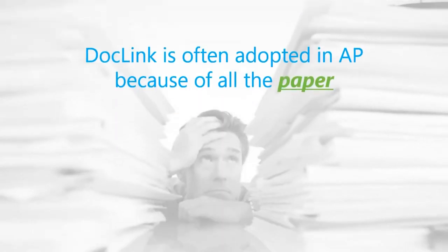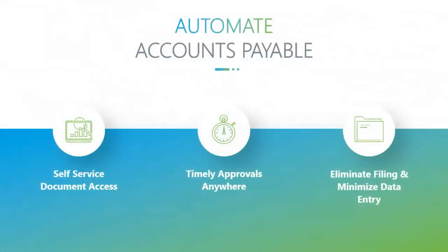When we start in AP, it's often adopted because of all the paper and tedious processes, and our strong integration with Sage makes it easy to automate. Automating AP allows for self-service access — an IT manager can go into DocLink and see if an invoice has been paid without bugging anyone. It also enables timely approvals from anywhere with workflow, eliminates filing, minimizes data entry with capture capabilities, and provides seamless ERP integration.